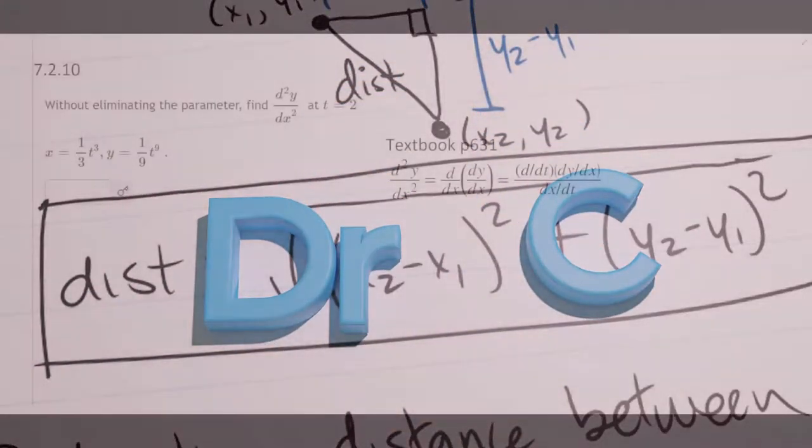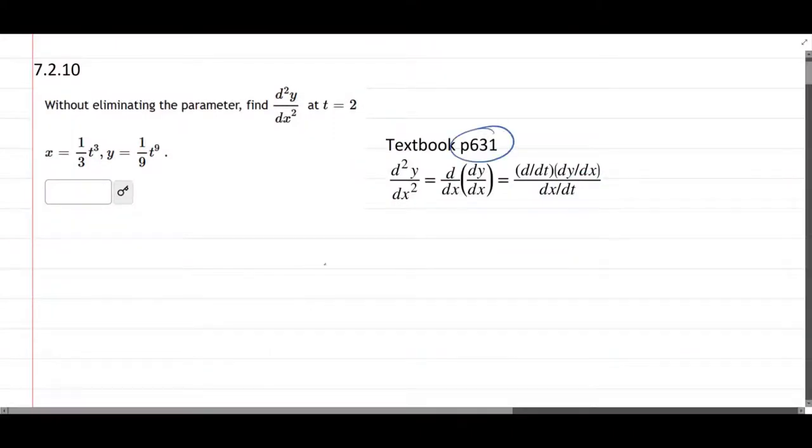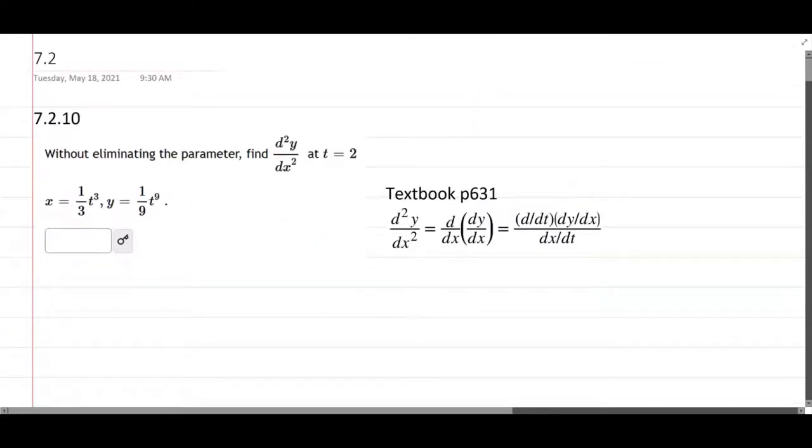We're about to find a second derivative at t equals 2, and so we're going to do the second derivative formula. I got that on the textbook, page 631, and it just disappeared. You take the regular dy dx derivative, and then you would apply another d dx. However, over in parameterized coordinates,